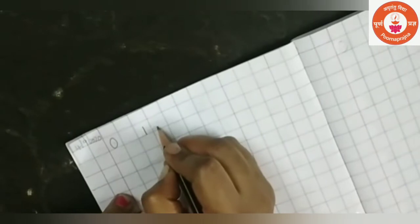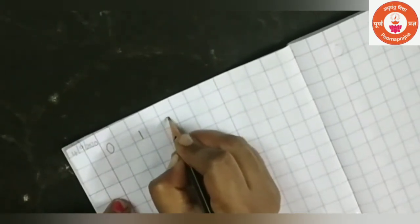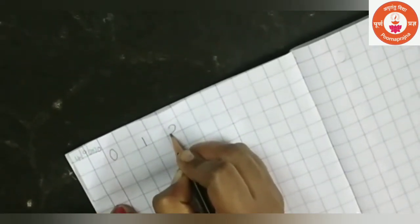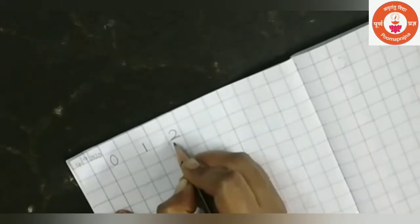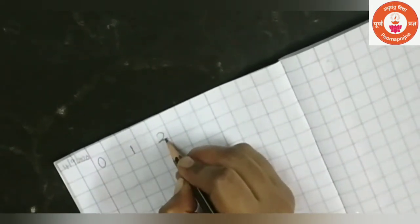Now leave one box and write 2. Right curve, sleeping line. 2. 2. Now after 2.